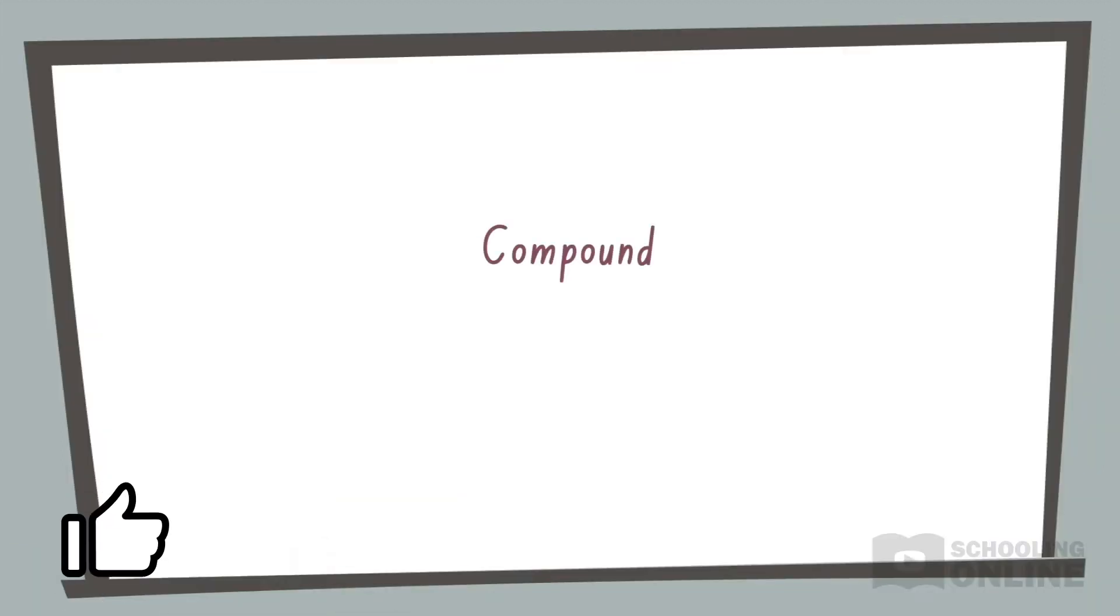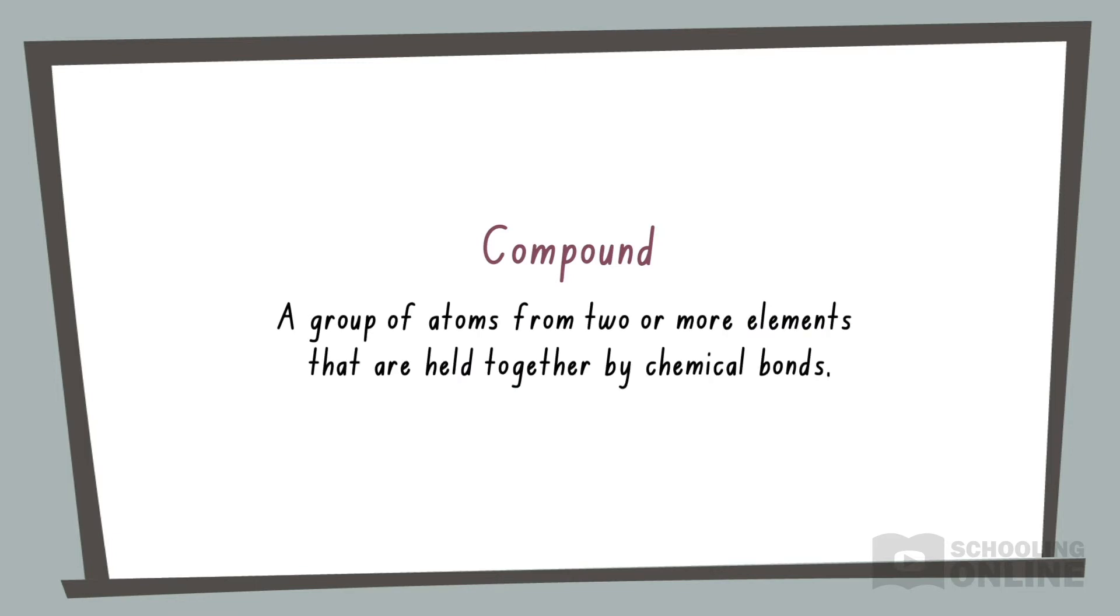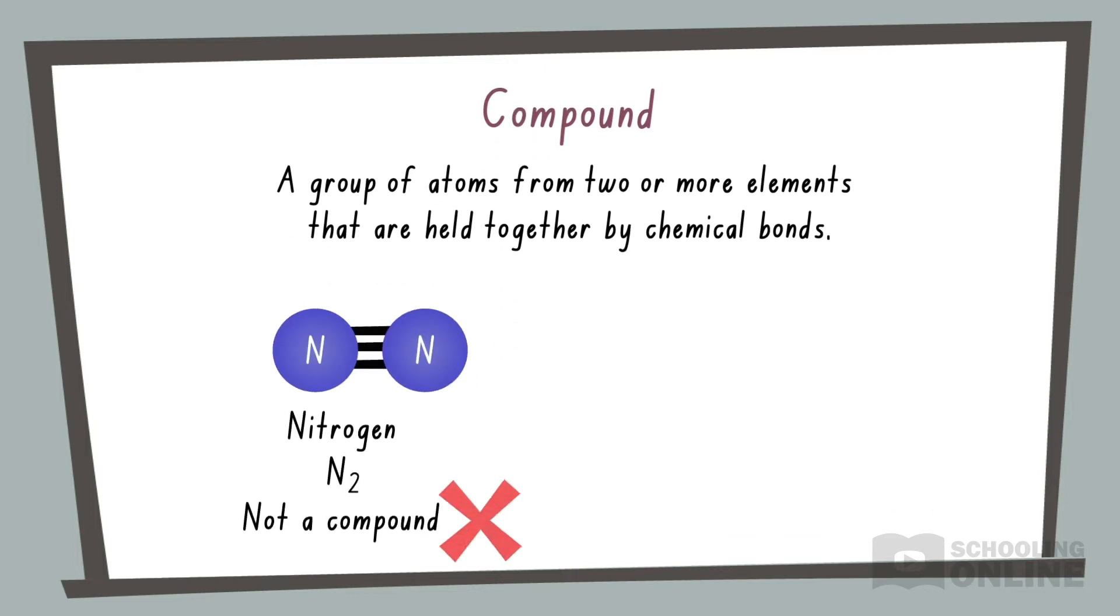Let's begin by defining some key terms. A compound is a group of atoms from two or more elements that are held together by chemical bonds. Nitrogen gas is not a compound because it contains nitrogen atoms only. But water is a compound because it contains hydrogen and oxygen atoms bonded to each other.